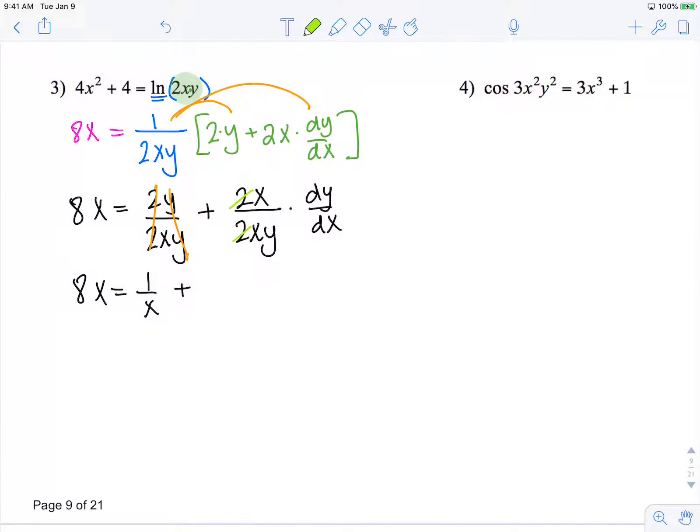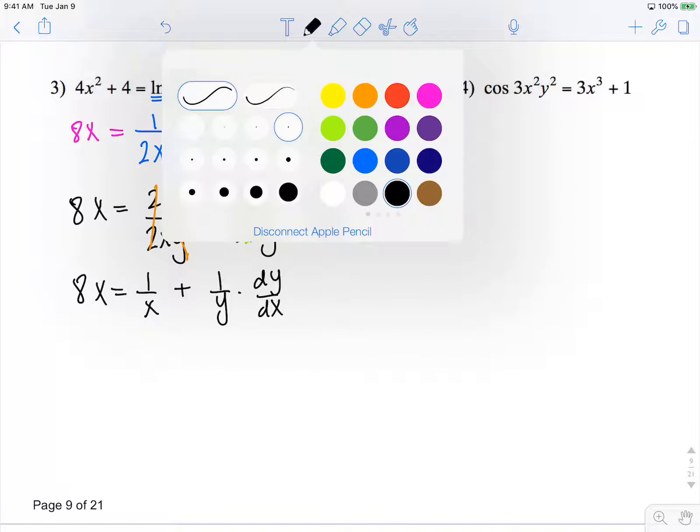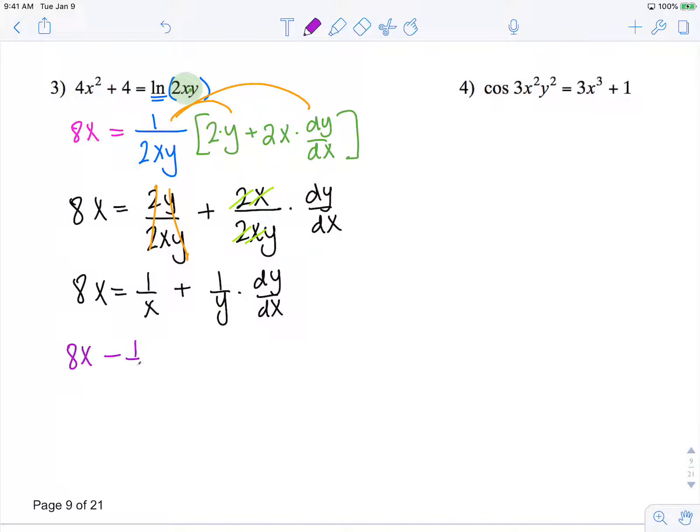these twos cancel, these x's cancel - 1 over y times dy/dx. So now I need to move anything that does not have dy/dx to the other side. So I have 8x minus 1 over x equals 1 over